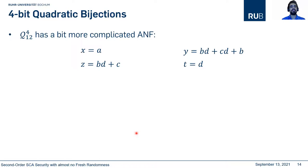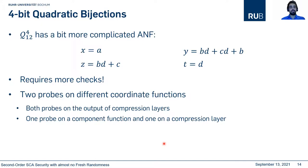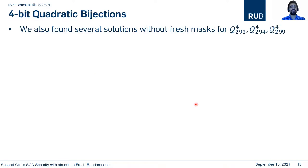We searched for uniform sharing and found more than 500 solutions that are second-order secure and fulfill joint uniformity — without any fresh masks. The next class is a bit more complicated, with two coordinate functions of algebraic degree 2. It requires more checks because the attacker can place one probe on one coordinate function and one on the other, or one on the compression layer of the first and one in a component function of the second. We also found many solutions without fresh masks for this class and applied our technique to other quadratic bijections, finding some solutions.